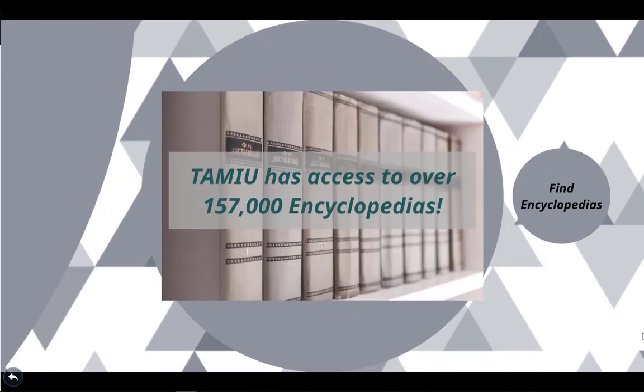There are many encyclopedia resources besides Wikipedia. Did you know that Killam Library has over 157,000? In the reference section on the first floor of the library, you can find many general and subject-specific encyclopedias. We also have many encyclopedias online as ebooks.